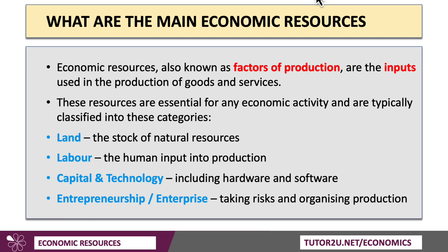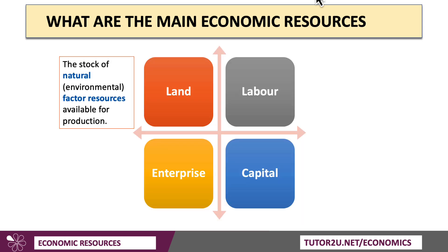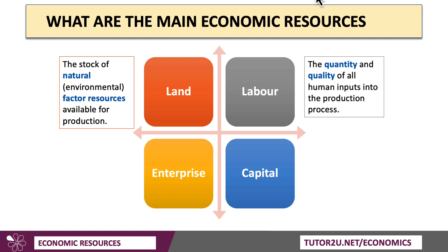Typically we classify resources into four main categories: land, labour, capital and technology, and entrepreneurship and enterprise. Land is the stock of natural or environmental factor resources available for production. Labour is the human input into production — so the quantity of labour as well as the quality of the labour resources available to us.